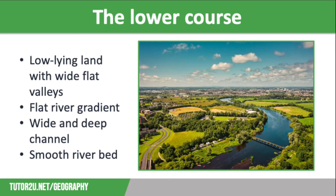In the lower course the land is low-lying with wide flat landscapes, and as a result the river's gradient is almost flat. The channel is at its widest and deepest here, with high velocity and discharge, and the riverbed is smooth and covered in alluvium. There is less erosion and it is only lateral, however the river is at its most powerful as velocity is greater here. There is a large load made up of tiny particles, so transportation is in the form of suspension or solution.